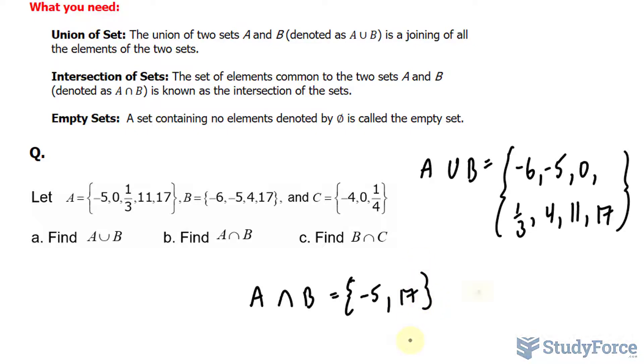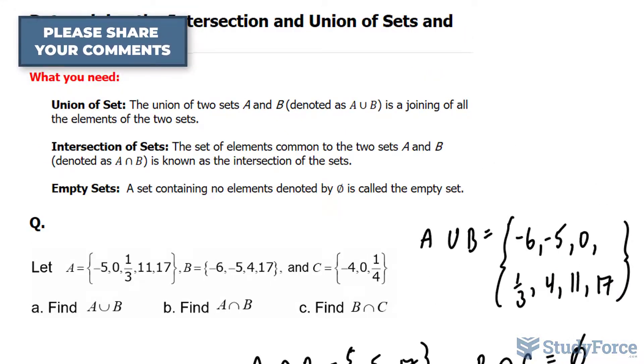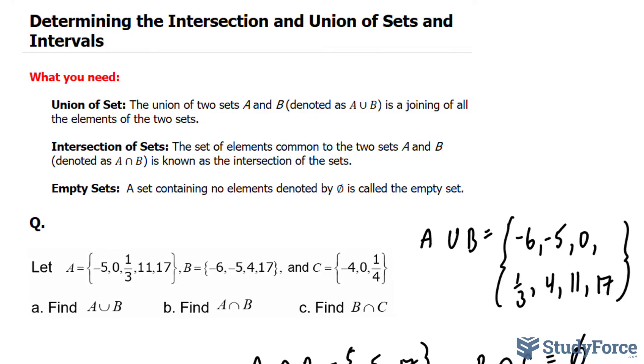And for C, the intersection of B and the set C. Unfortunately, there isn't anything in common between these two, so this will be an empty set, denoted with the symbol. And there you have it, a really quick introduction on how to determine the intersection and union of sets and intervals.